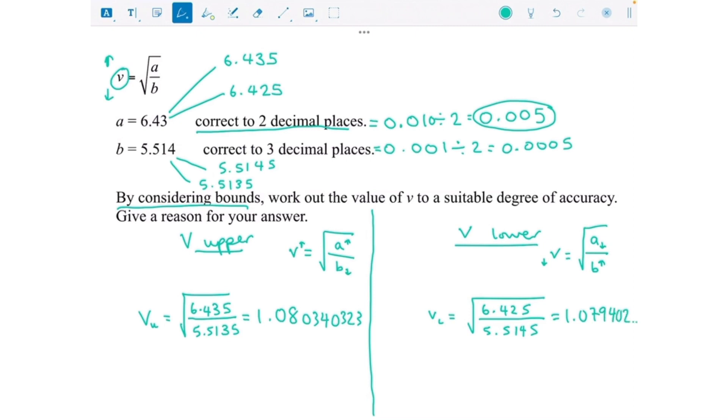Looking at both, it says by considering bounds we need to give an answer for v to a suitable degree of accuracy. We could say they're both 1 because they both round to 1. Both these answers round to 1.1 as well. If we do two decimal places, this number rounds to 1.08.